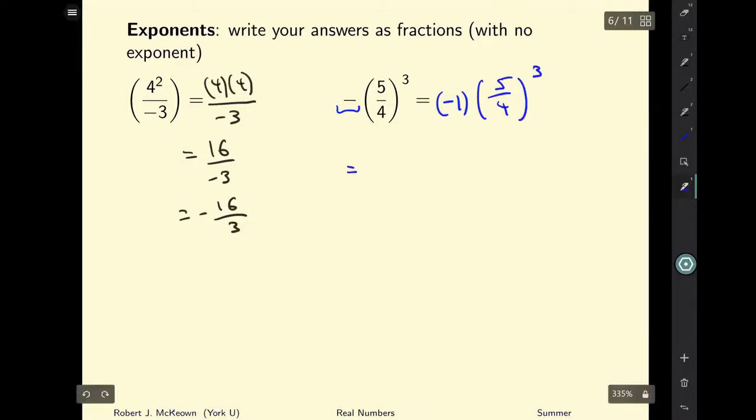And that's like writing negative 1 multiplied by 5 over 4 times 5 over 4 times 5 over 4. I could rewrite this in another way. I could say this is like negative 1 multiplied by 5 to the power of 3 divided by 4 to the power of 3. So they all mean the same thing.